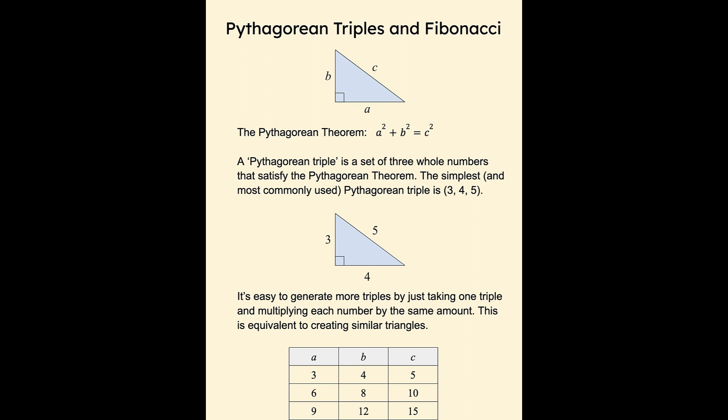But that only makes sense if you have a diagram of a right triangle in front of you, where the legs of the right triangle are labeled a and b, and the hypotenuse is labeled c.